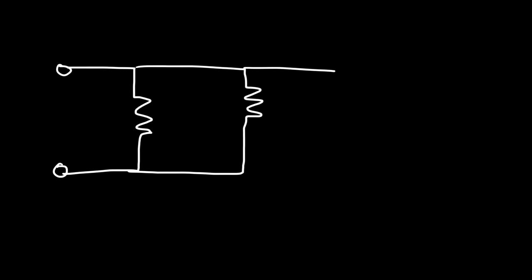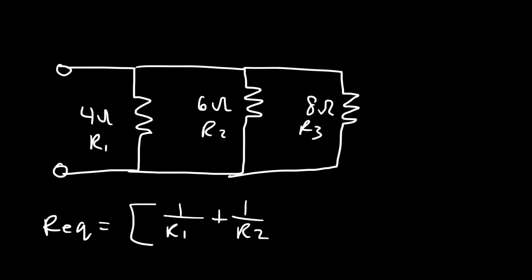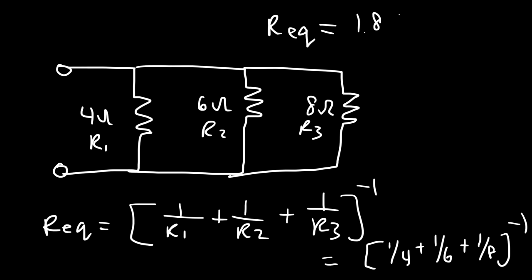Now what if we have three resistors in parallel? Let's say this is a 4 ohm resistor, a 6 ohm resistor, and an 8 ohm resistor. What's the equivalent resistance of this circuit? We'll call this R1, R2, and R3. We can use this formula: it's 1 over R1 plus 1 over R2 plus 1 over R3, all raised to the negative 1 power. So that's 1 over 4 plus 1 over 6 plus 1 over 8 — just type it in your calculator. The equivalent resistance is 1.846 ohms.